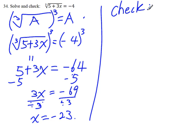Whenever we solve a radical equation, we have to check our solutions before we write the final answer, because we may need to discard one of our solutions or more. But we have only one solution here, x equals negative 23.